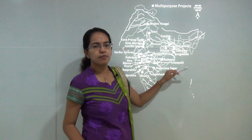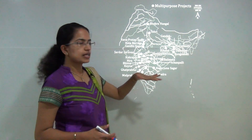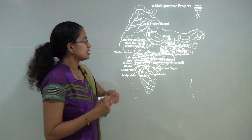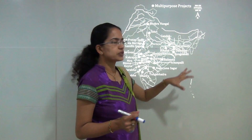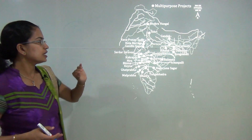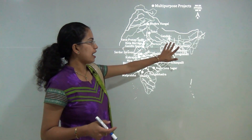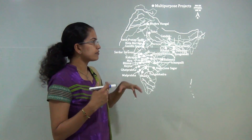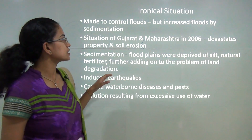Nagarjuna Sagar Dam forms a boundary between Telangana and Andhra Pradesh and is based on one of the biggest rivers of the region — the Krishna. Hirakud Dam is located in Odisha. Damodar Dam is based on the Tennessee Valley model of the United States; the Damodar valley was previously known as the 'Sorrow of Bengal.' Four dams are built there: Tilaiya, Maithon, Panchet, and Konar. The Kosi Dam is called the 'Sorrow of Bihar,' and the Gandak Dam is a joint venture between India and Nepal.